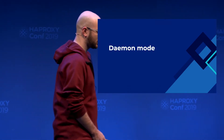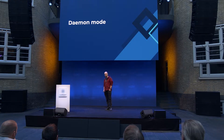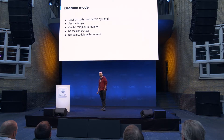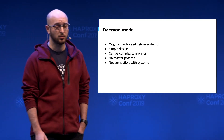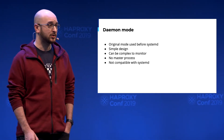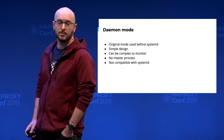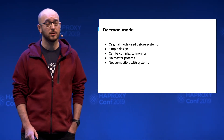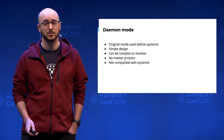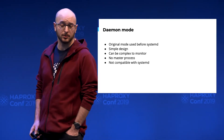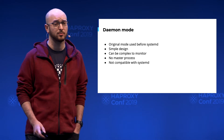To understand why we needed the master-worker mode, I have to introduce the daemon mode and what are the flaws in it. The daemon mode is the original mode used before systemd — when you had a distribution with System V, you used this mode. It's a simple design; basically it only launches the process. It can be complex to monitor because you have to monitor every single process. You can have many, and when you reload, you can have many more. There is no master process, so you can't monitor only one, and this is a problem with systemd.